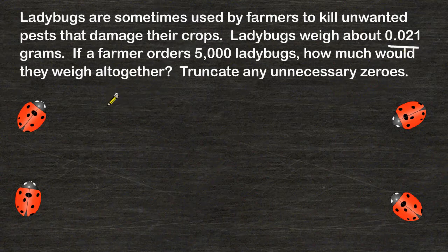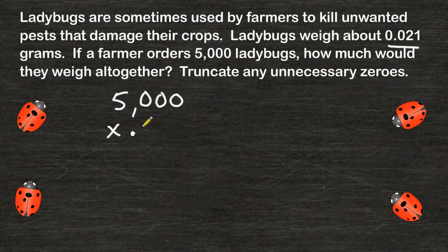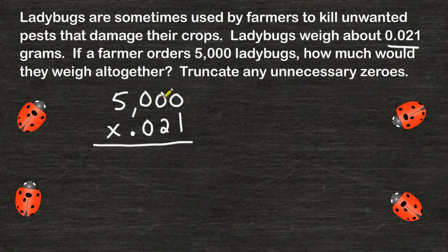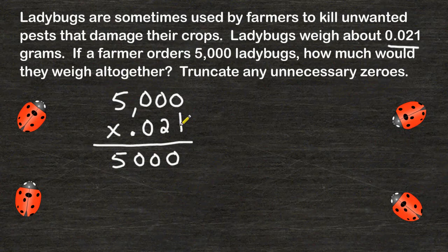To solve, we must multiply 5,000 by 21 thousandths. We're going to start by multiplying the number 1 by all of the numbers at the top. 1 times 5,000 is 5,000, so we can quickly write the number 5,000. Now that we are finished with this place value, we are going to write a zero right underneath that place value to signify that we have completed it.